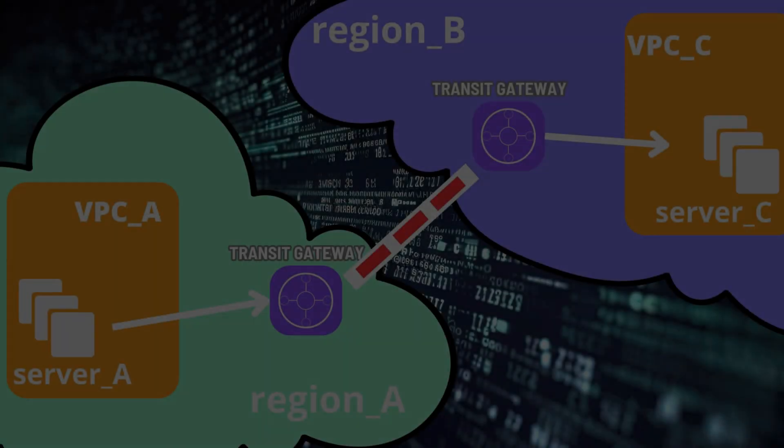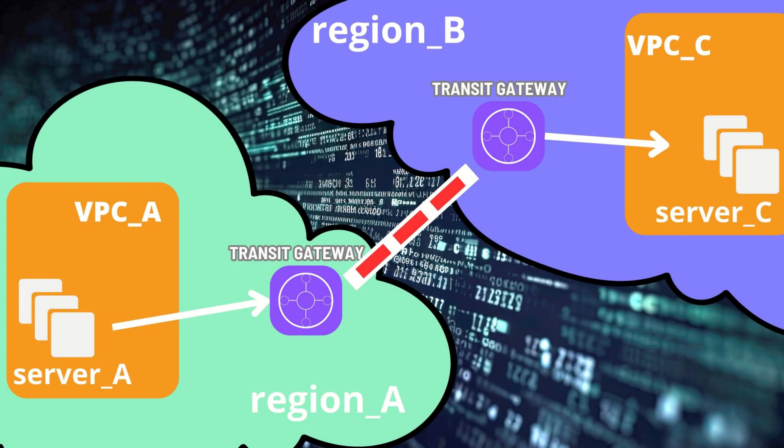In this tutorial I will check if I will be able to connect from server A in VPC A in the Ohio region to server C in VPC C in the Northern Virginia region through two transit gateways connected via peering. I have already created EC2 machines and VPC networks. Now I will quickly create transit gateways.